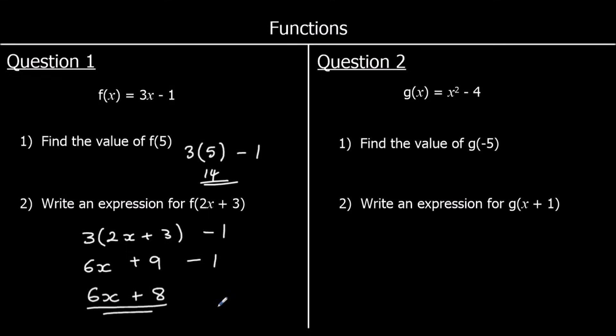Question 2: we've got a g function which is x squared minus 4. Question 1 says find the value of g(negative 5). So negative 5 is the input — change x to negative 5. Negative 5 squared minus 4. 25 minus 4 is 21.